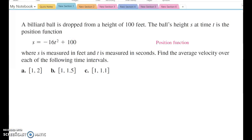Let's look at one example. A billiard ball is dropped from a height of 100 feet. The ball's height s at time t is the position function, given as s equals negative 16t squared plus 100.